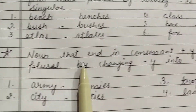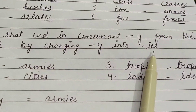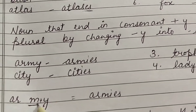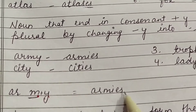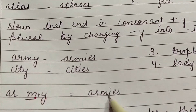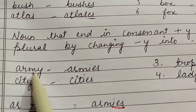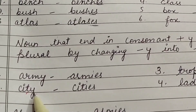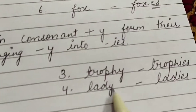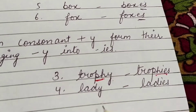Nouns that end in a consonant plus -y form their plural by changing -y into -ies. For example: army → armies (consonant + y), city → cities (t is consonant + y), trophy → trophies, lady → ladies.